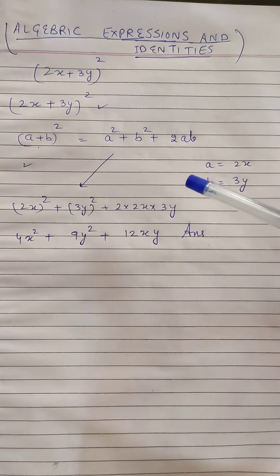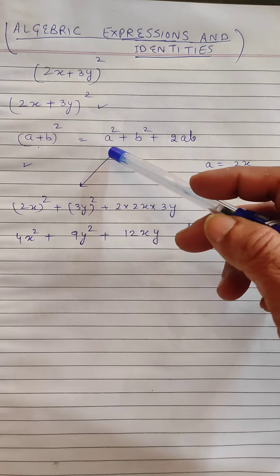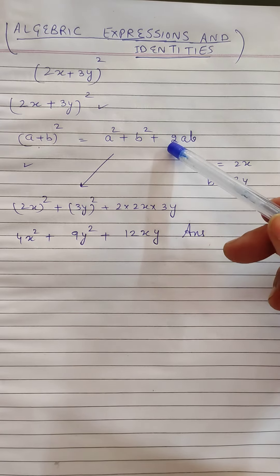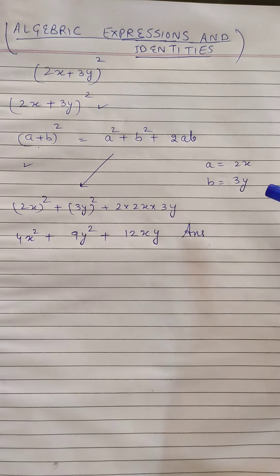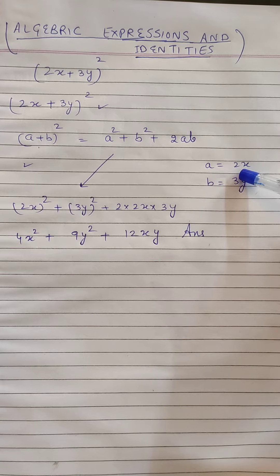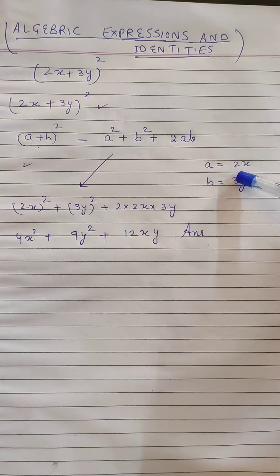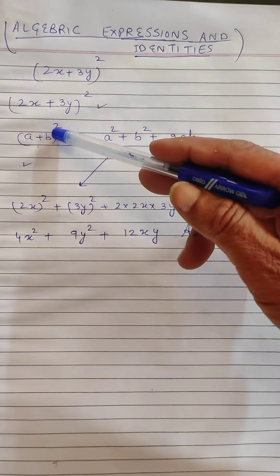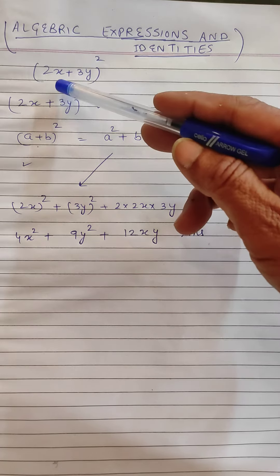The (a + b)² identity gives us a² + b² + 2ab. So a is equal to 2x. How do we know? From (a + b), which is (2x + 3y), so a will be 2x.